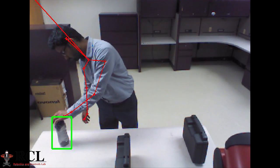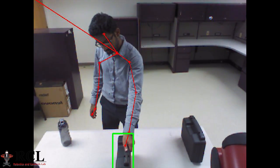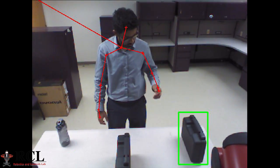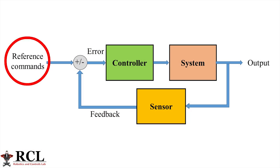In this method, the robot collects a set of demonstrations of the user performing a certain task. Then a mathematical function is generated to encode this task. Using this mathematical function, reference commands are generated for the robot to follow.